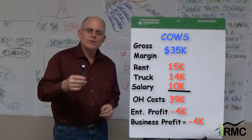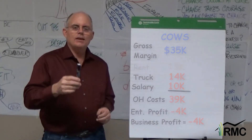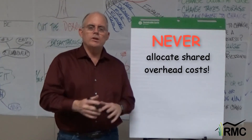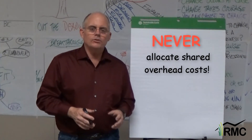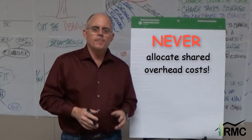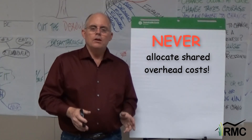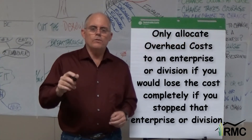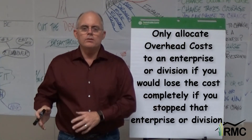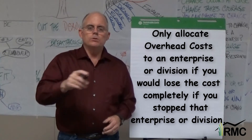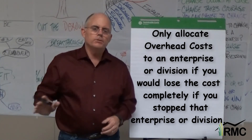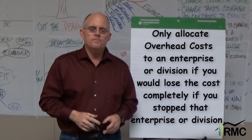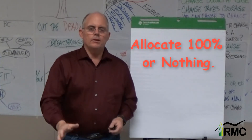Following the experts' advice — allocating shared overheads proportionately between enterprises — led us to a costly decision. The experts are wrong. The only time you allocate overheads to one part of the business or another is if you'd lose the cost completely if you discontinued that part of the business. It's 100% or nothing.